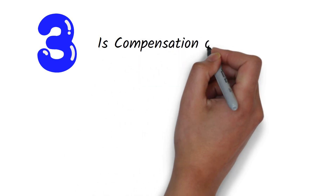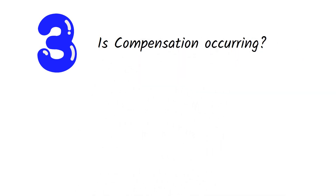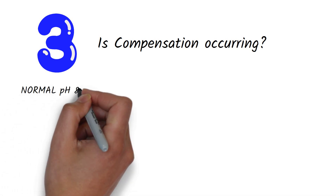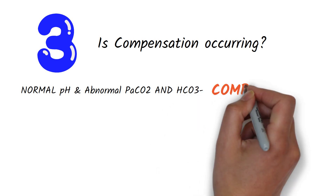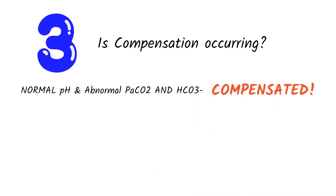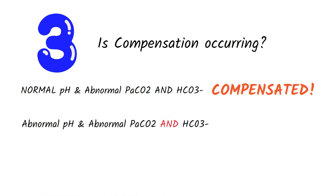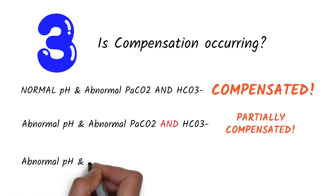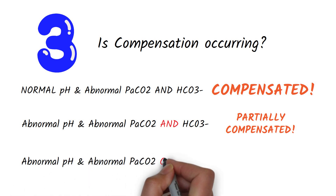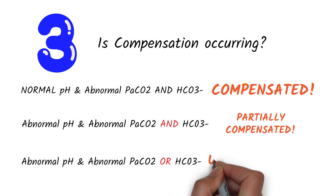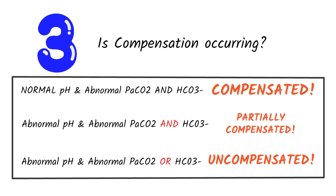Step number three: after you determine whether it's metabolic or respiratory, check if compensation is occurring. A normal pH with out-of-range PaCO2 and bicarbonate indicates full compensation. An abnormal pH with abnormal PaCO2 and bicarbonate values indicates partial compensation — the body is in the process of fixing the imbalance but has not yet brought the pH back to normal. An abnormal pH with abnormal PaCO2 or bicarbonate indicates that compensation is not yet happening — in other words, it's uncompensated.